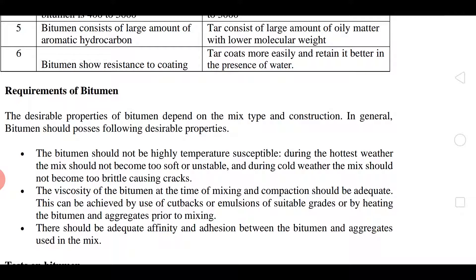Adequate viscosity can be achieved by use of cutbacks or emulsions of suitable grade, or by heating the bitumen and aggregates prior to mixing. Most of the time this is followed — aggregates are pre-heated and bitumen is also heated, then they are mixed together.